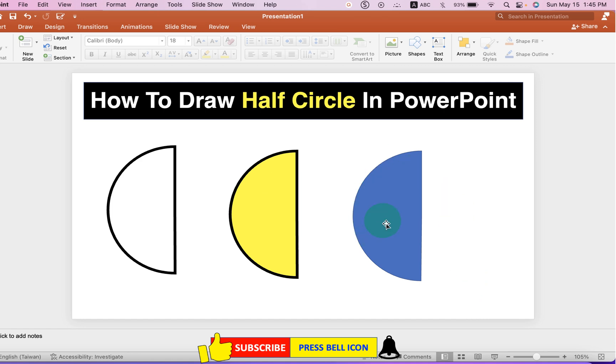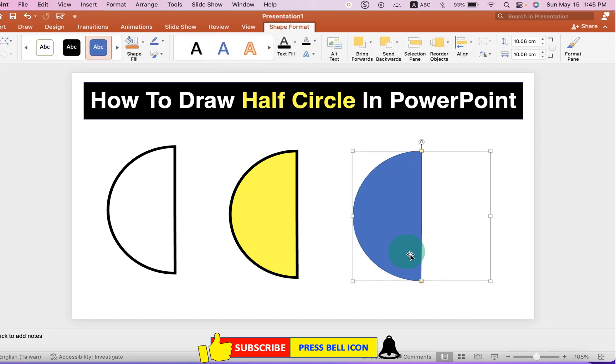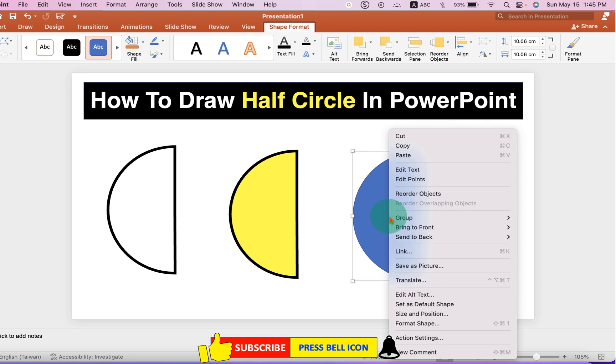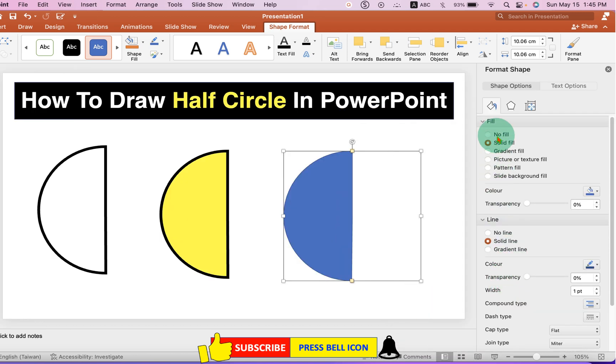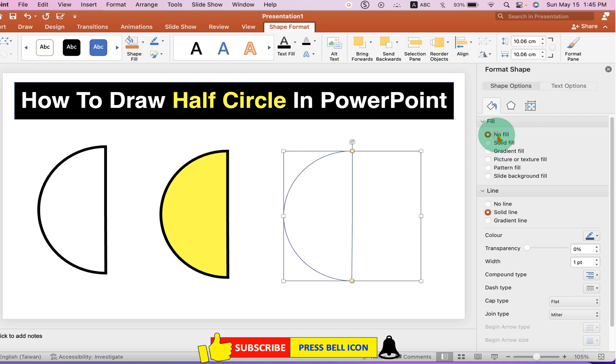Now we need to change the outer border and color of the circle. If you don't want color, you can go to the Format Shape option and select the option No Fill. However, notice that the borders are very thin.